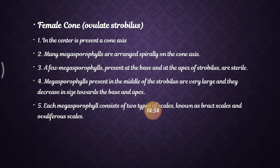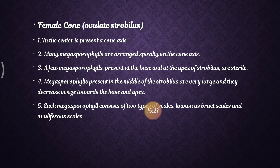In the female cone, there is a central cone axis similar to the male cone, and megasporophylls are arranged spirally on the cone axis. A few megasporophylls at the base and apex of the strobilus are sterile, while those in the middle are fertile and very large, decreasing in size towards the base and apex.